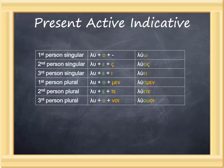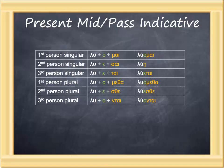The present middle passive is formed similarly, with a present stem, a connecting vowel, and a personal ending. But in this case, it's the primary middle passive endings—mai, sai, tai, metha, sthe, ntai—that are added to give the form.